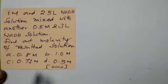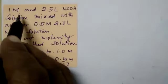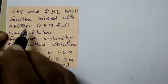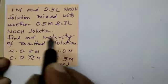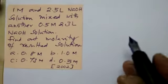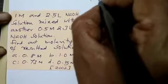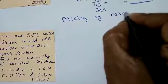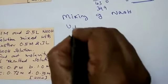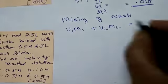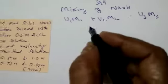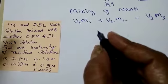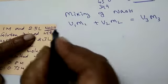Moving to the next question — a 2002 question. One molarity and 2.5 liters of sodium hydroxide solution is mixed with another 0.5 molarity and 3 liters of NaOH solution. Find out the molarity of the resulting solution. This involves the law of mixing solutions. The formula is V₁M₁ + V₂M₂ = V₃M₃, where V₃M₃ is the new resulting solution.